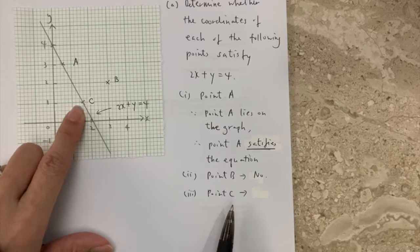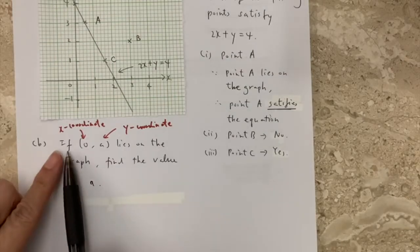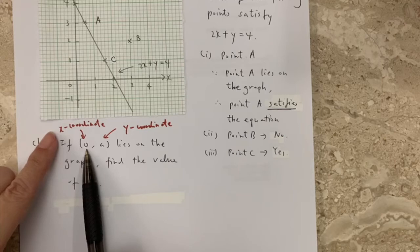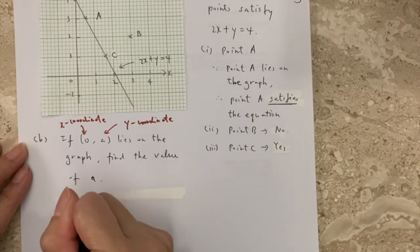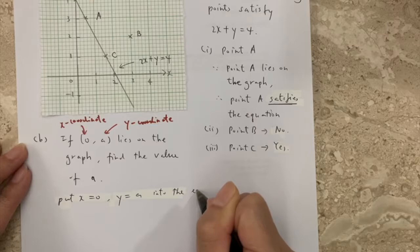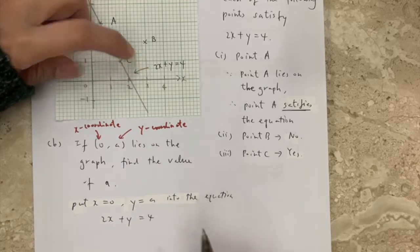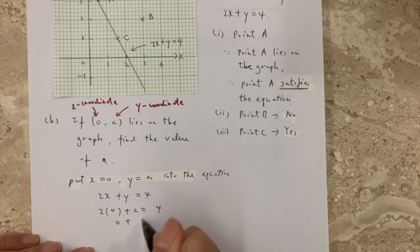Point C is lying on the graph, so point C satisfies the equation. For part B, if the point (0, A) lies on the graph, we need to find the value of A. Here, 0 is the x-coordinate and A is the y-coordinate. We put x equals 0 and y equals A into the equation 2x plus y equals 4. So that is 2 times 0 plus A equals 4, giving 0 plus A equals 4, therefore A equals 4.